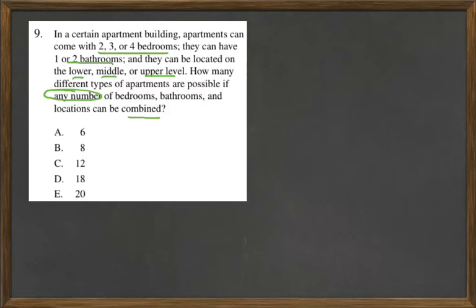Let's start with bedrooms. How many combinations are there? Well, there's one, two, three options there, so we have three. And then bathrooms, we can have one or two bathrooms, three times two.